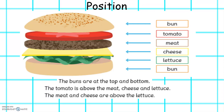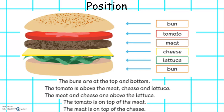The meat and cheese are above the lettuce. The tomato is on top of the meat and the meat is on top of the cheese.